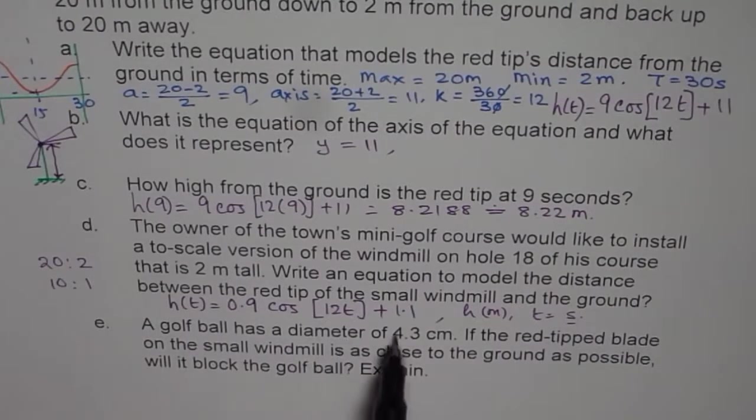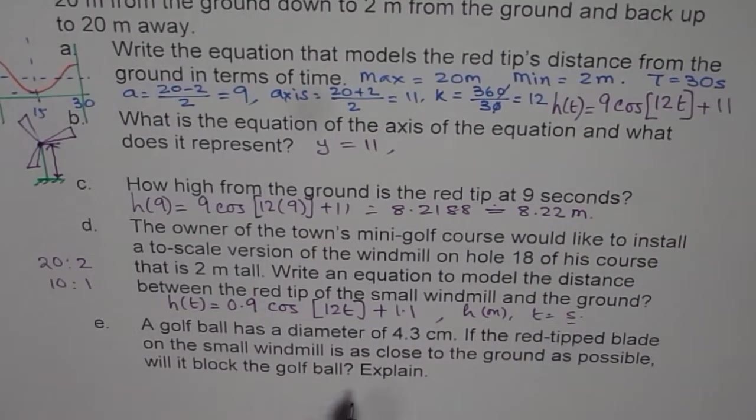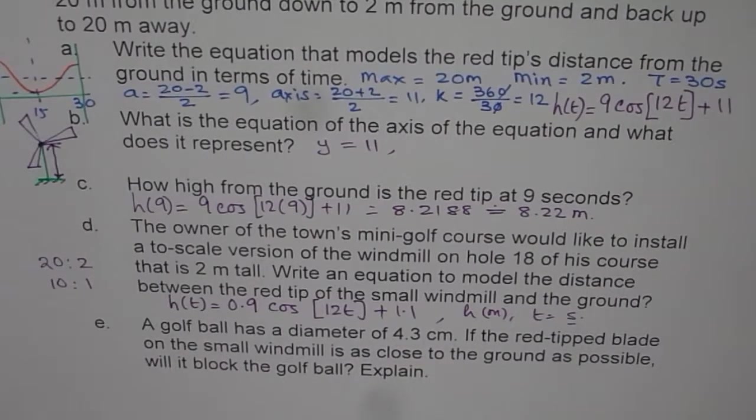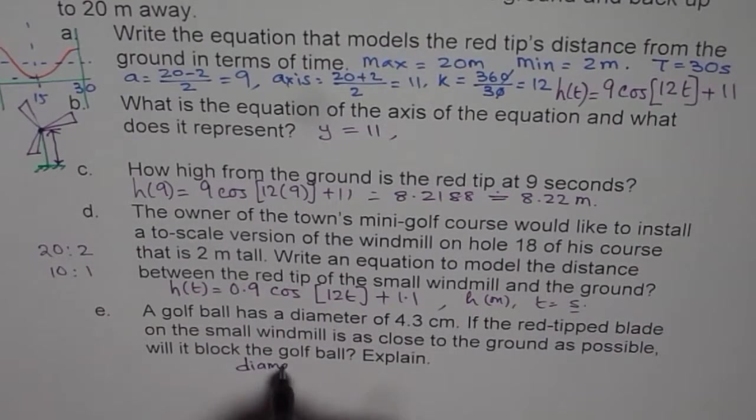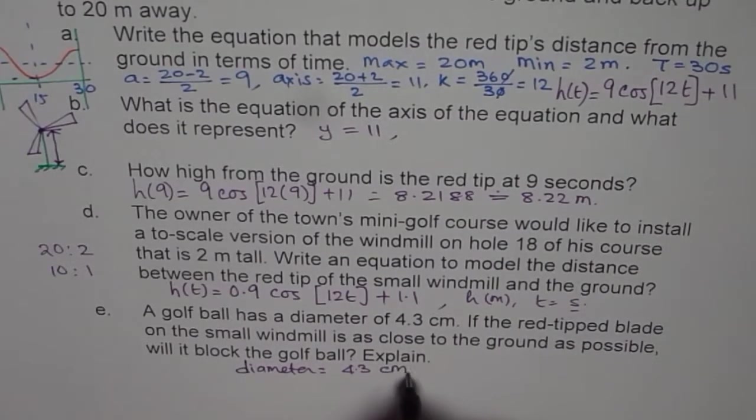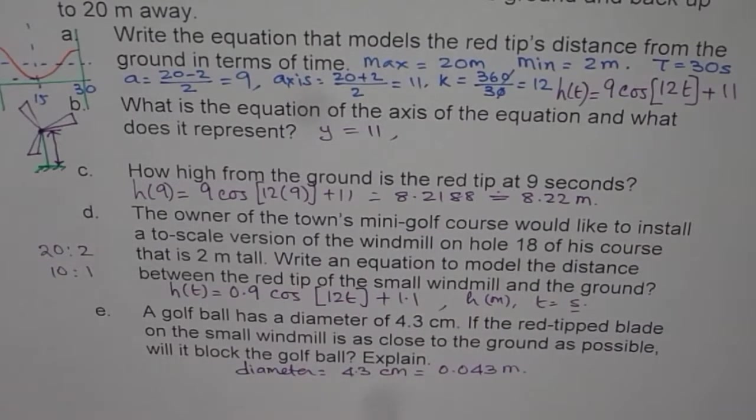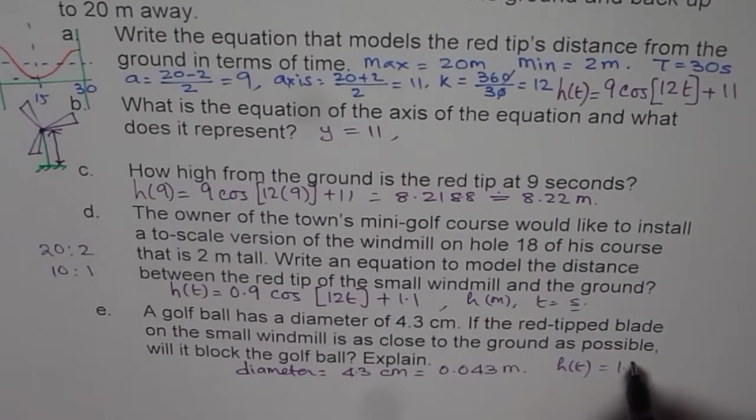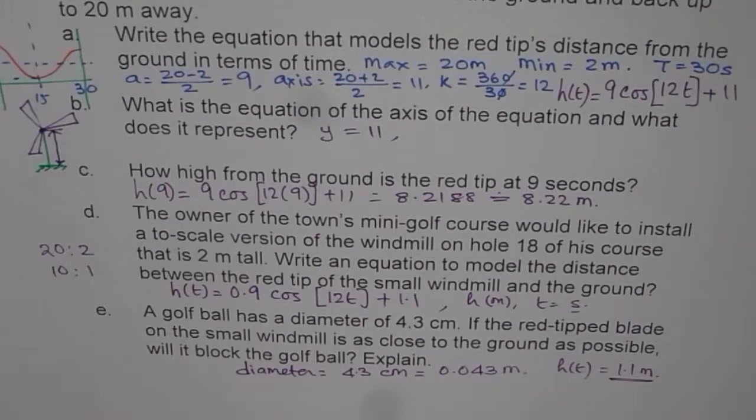Part E is, a golf ball has a diameter of 4.3 centimeters. If the red tip blade of the small windmill is as close to the ground as possible, will it block the golf ball? Now for that, what is the height of the ball? It is given to us as diameter is 4.3. So when we say, let me push it a bit more forward, when we say diameter is 4.3, so that is going to be the height. So diameter equals to 4.3. It is in centimeters. To convert it in meters, we have to divide by 100. So it becomes 0.043 meters. As you can see from the equation, the minimum height at any time is going to be how much? 1.1 meters. So there is a lot of margin in between. So therefore, the ball is not going to get blocked with this model.